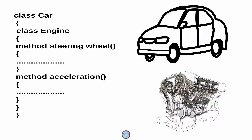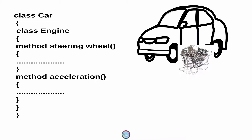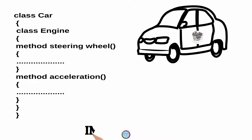In simple terms, the Car class is now able to use the methods defined inside the Engine class. So the Car class which was previously empty now consists of two methods — steering wheel and acceleration — which belong to the Engine class. This concept where one class can use the methods of another class is called inheritance.